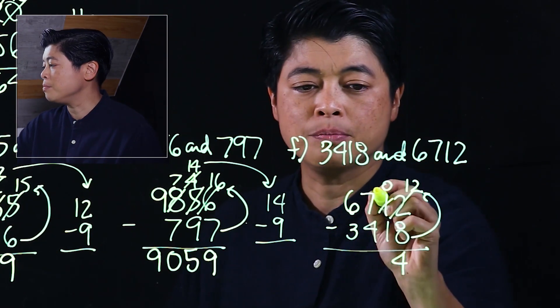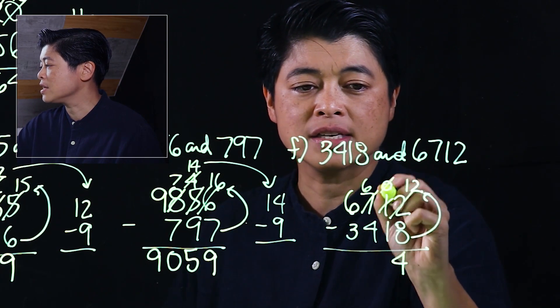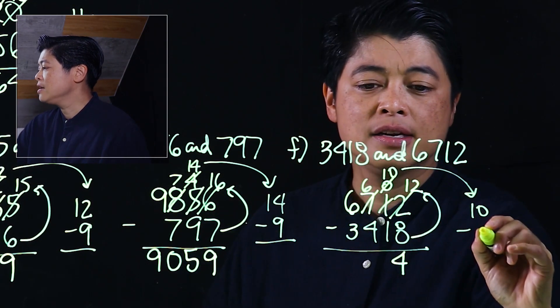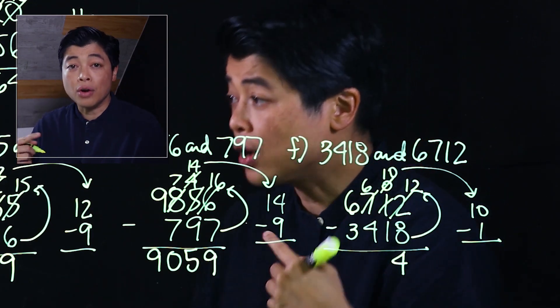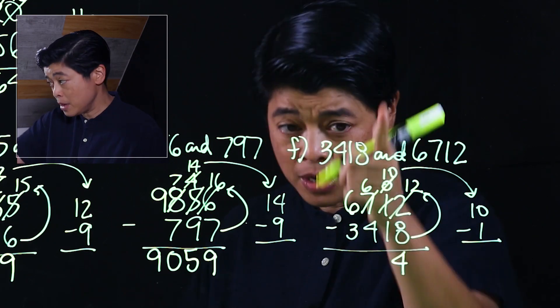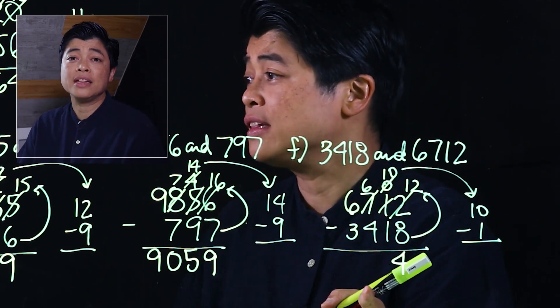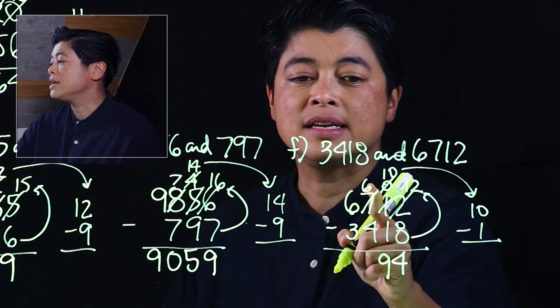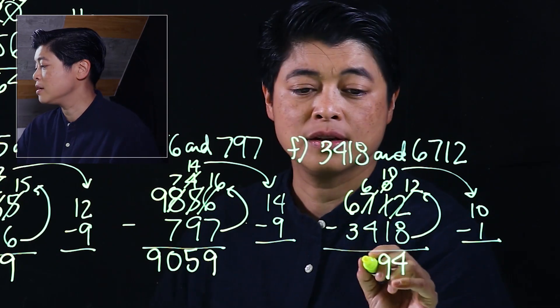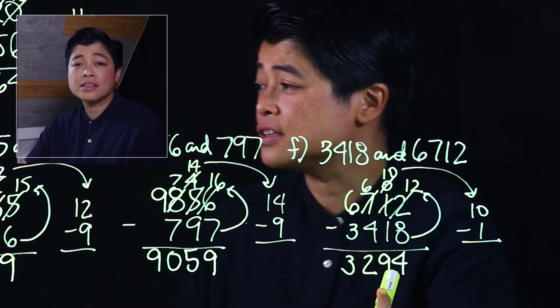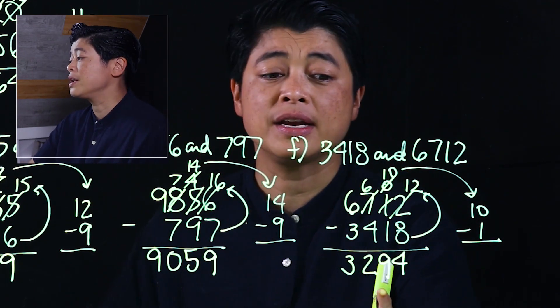But we can't take away 1 from 0. Borrow, borrow 6, cross out, make it 10. If you need to put it to the side so that the kids can concentrate, then it's fine. If they can do it on the same column, then it's fine too. So that means I need 9 more. And then 6 minus 4 is 2, and this will be 3. So our final answer should be 3294.